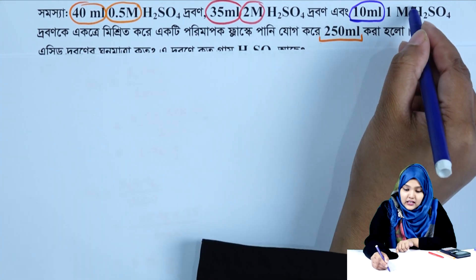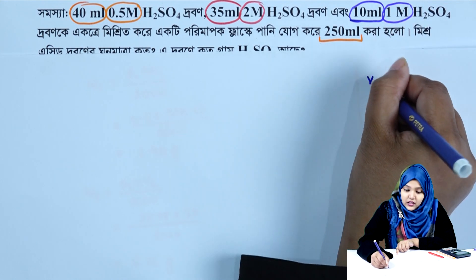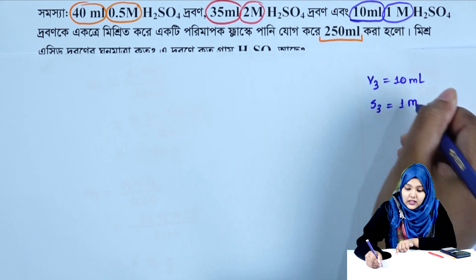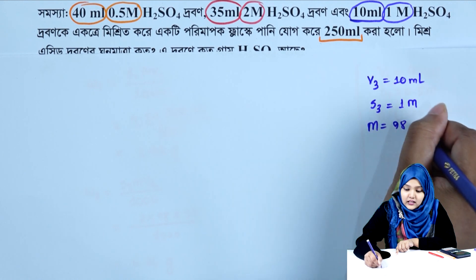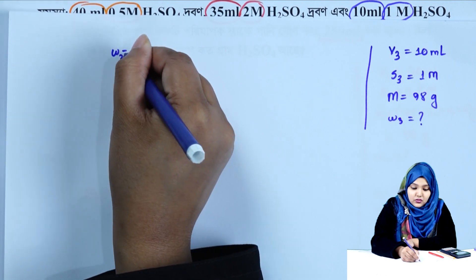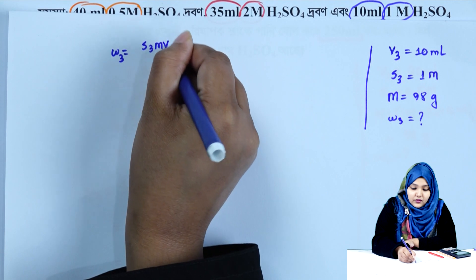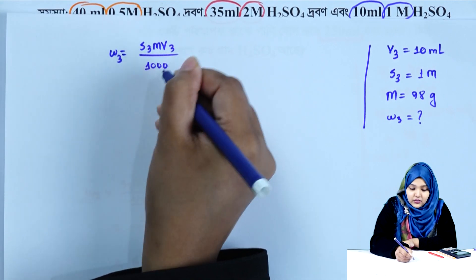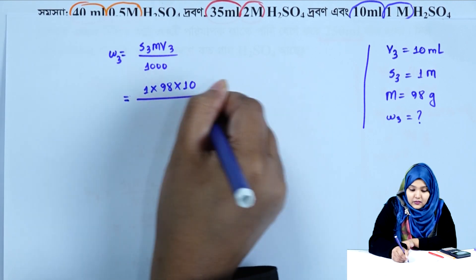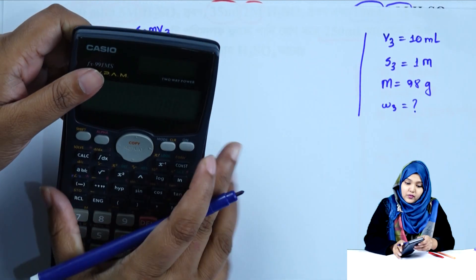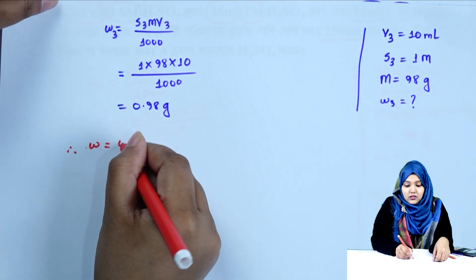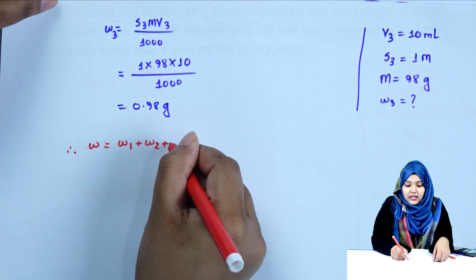For the third drop: V3 = 10 ml, S3 = 1 molar, M = 98 grams. w3 = S3 × M × V3 / 1000 = 1 × 1 × 98 × 10 / 1000 = 0.98 grams. So the total mass of sulfuric acid: w = w1 + w2 + w3.